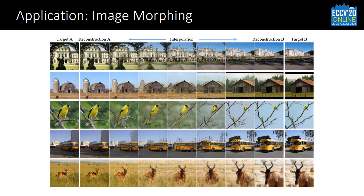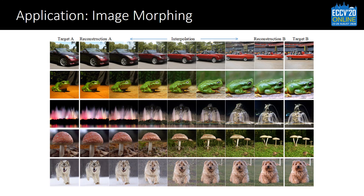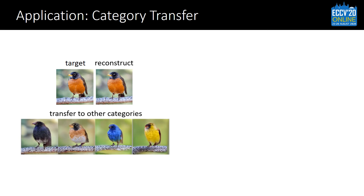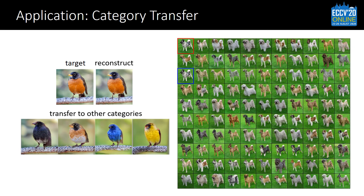Here we show more image morphing results. As the BigGAN we use is a conditional GAN, we can transfer the reconstructed image to other categories by changing the input class condition. Here shows category transfer results for birds and dogs, where the animal pose, size, and image configurations are left unchanged.